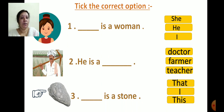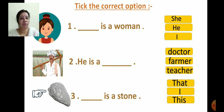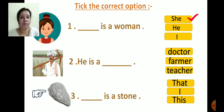For a girl or a woman, we use 'she'. For a boy or a man, we use 'he'. And when we are talking about ourselves, we use 'I'. The picture is of a woman, so we are using the first option: 'She is a woman.' Click on the first option. Understood, children?